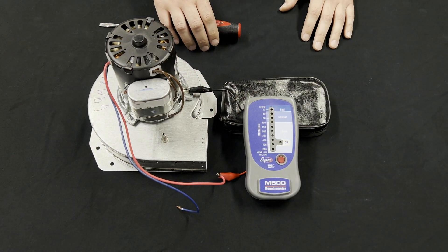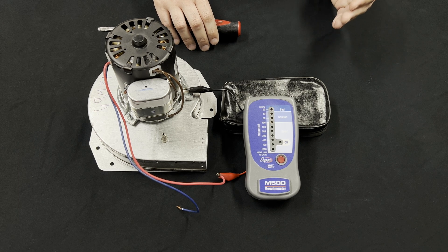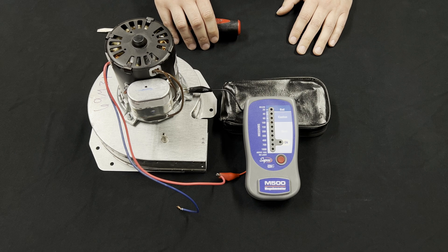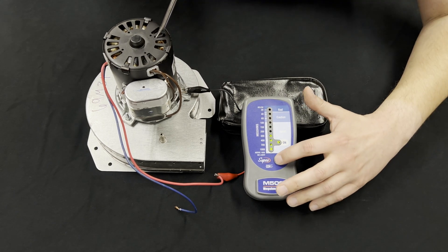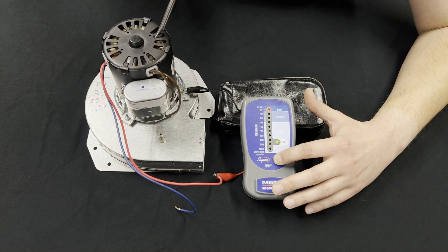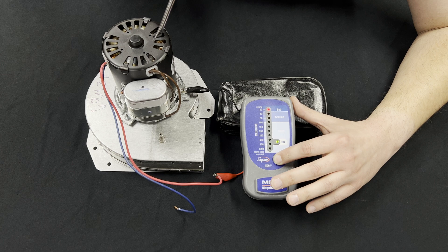To simulate what it would look like if the insulation had broken down and was coming in closer contact to the frame or ground of the case, I'm going to put this screwdriver in here and touch between the winding and the case to show that the insulation reads as bad.